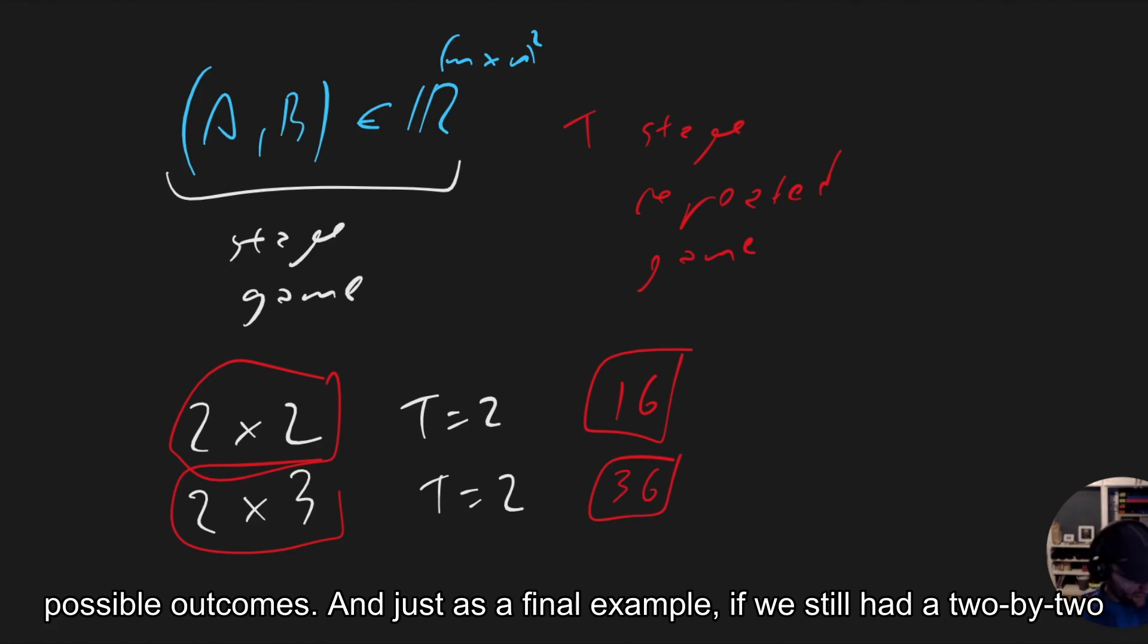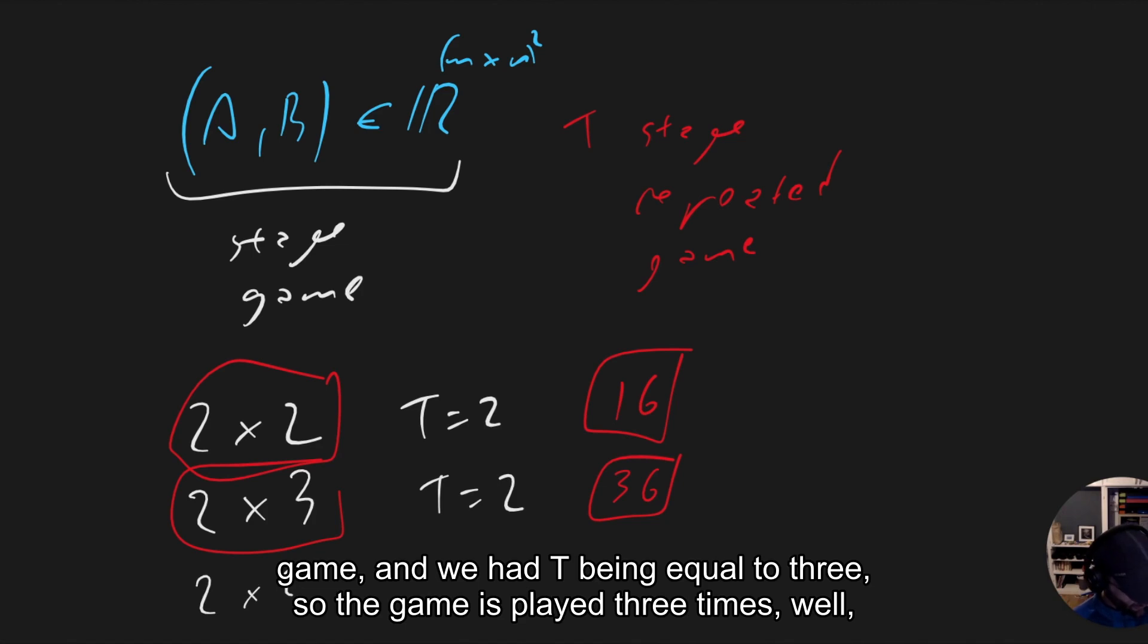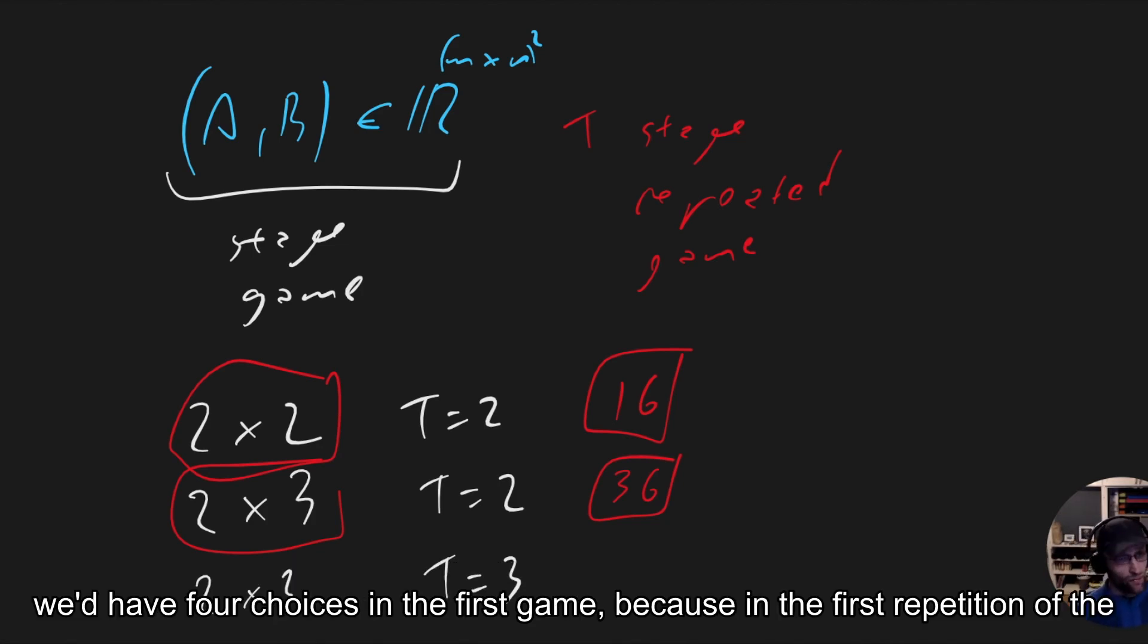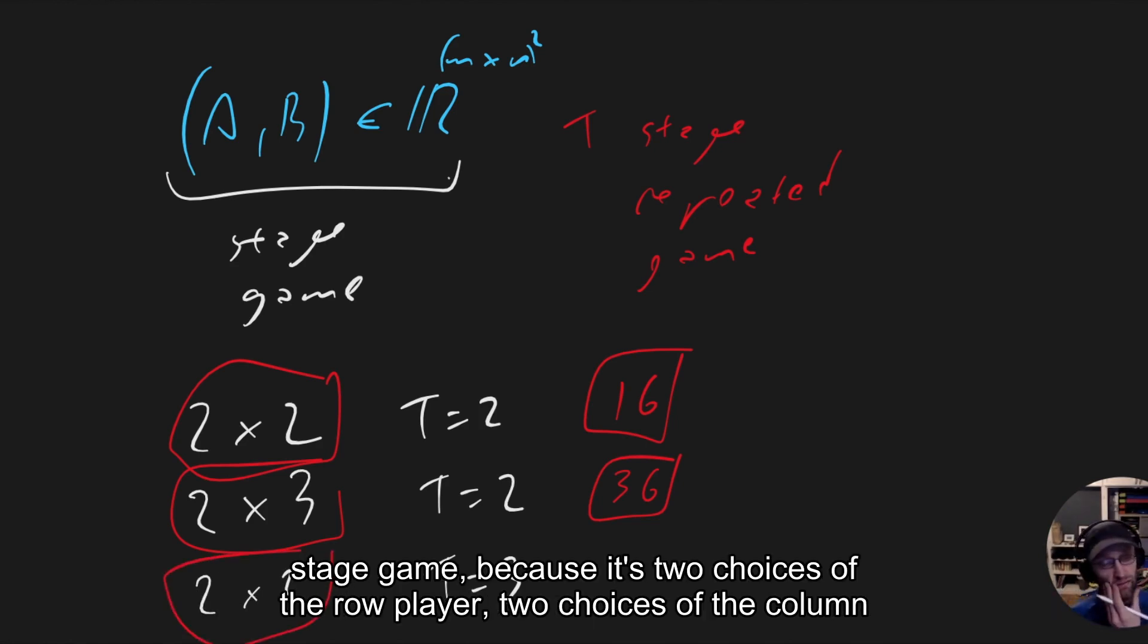And just as a final example, if we still had a two-by-two game and we had T being equal to three, so the game is played three times, well, we'd have four choices in the first game, in the first repetition of the stage game, because it's two choices of the row player, two choices of the column player.